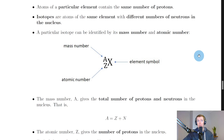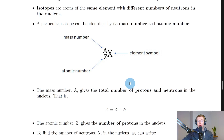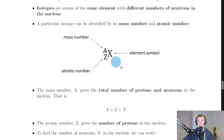If we write down the element symbol X, the superscript number towards the upper left-hand side is called the mass number, given the symbol A. The atomic number appears as the subscript — the lower number. Using the periodic table on your data sheet, we can write elements with their mass number and atomic number.